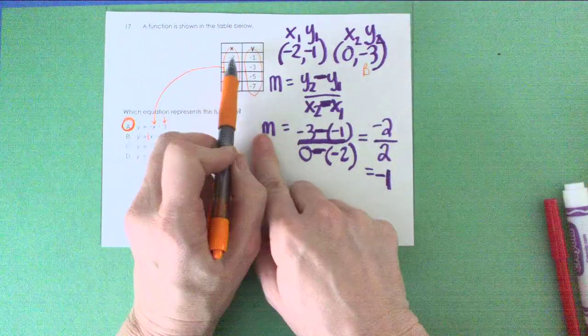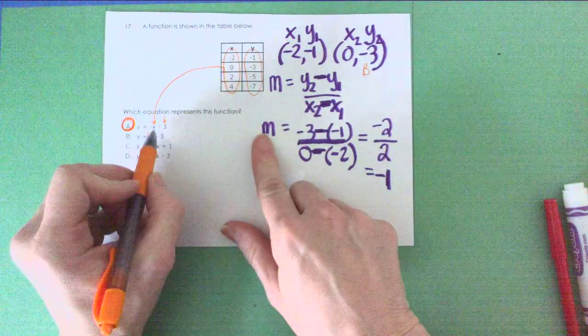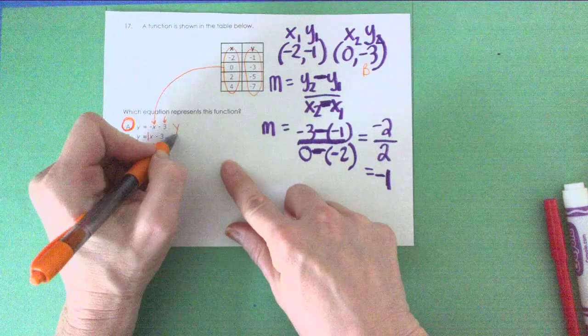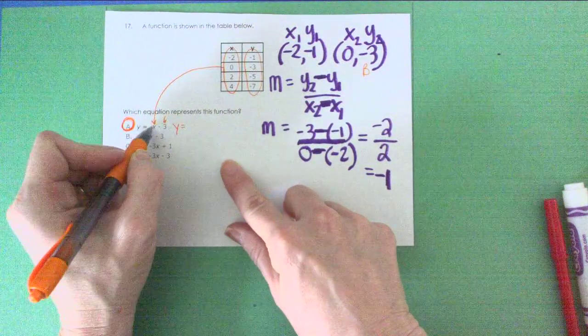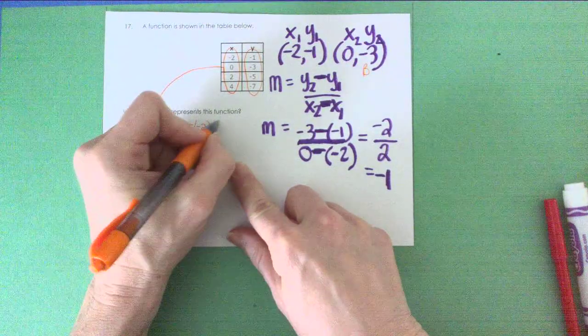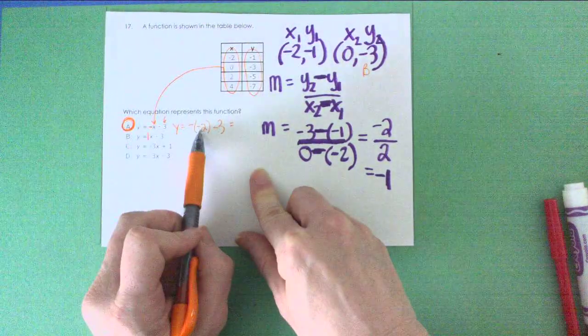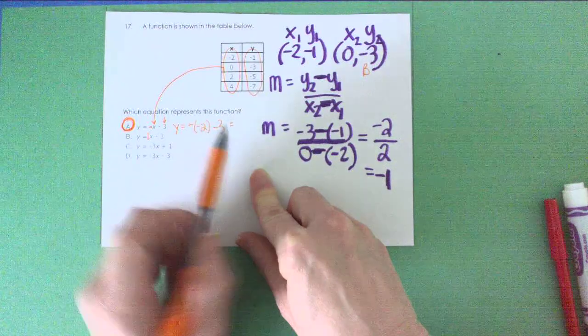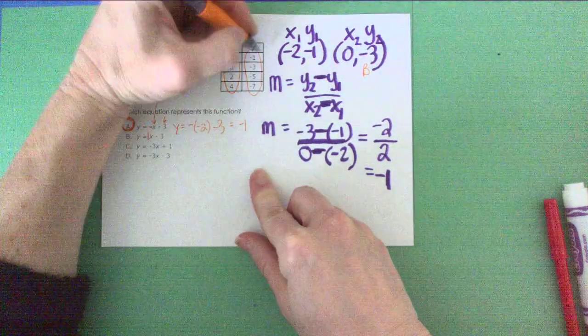So like if I would start with negative 2, if I insert negative 2 in for this x, I would have y equals opposite of negative 2 minus 3. Well, the opposite of negative 2 is positive 2. Positive 2 minus 3 is negative 1, which I have right here. If I had put 0 in for x, I would have the opposite of 0 minus 3. Well, the opposite of 0 is still 0, minus 3 is negative 3.